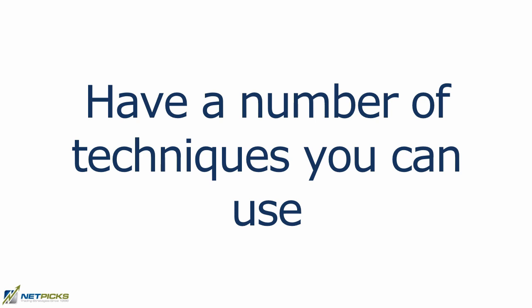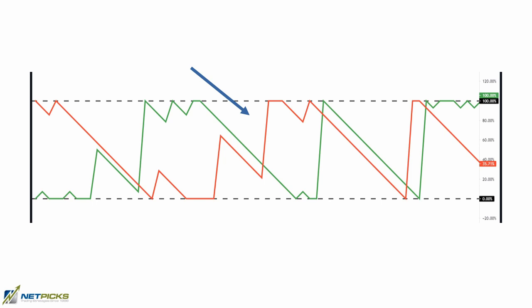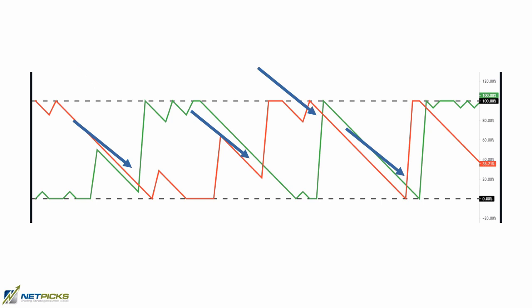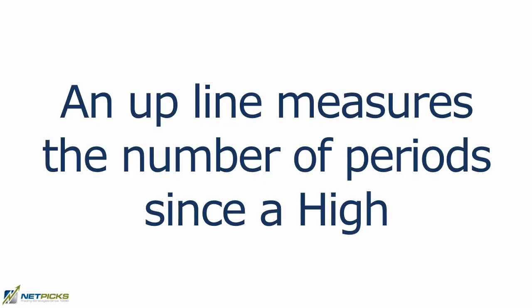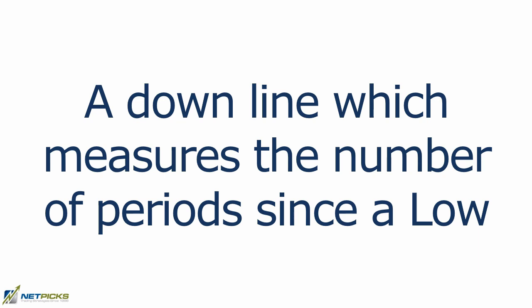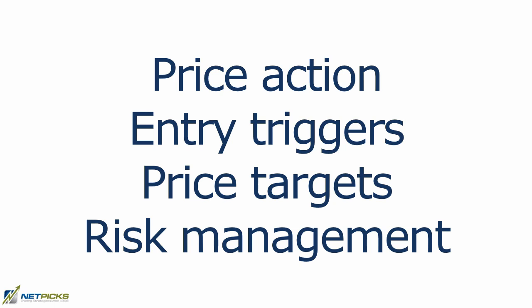Key takeaways: when the Aroon Down is above Aroon Up it shows bearish price action; Aroon Up above Aroon Down shows bullish price action. The crossing of the up and down lines can show a change in trend, especially on higher timeframes. The up line measures the number of periods since we saw a high; the down line measures the number of periods since a low. Bottom line — it's a tool. By itself it's not a trading strategy. You need to implement price action, have a trade trigger, know when to get out, and have risk protocols. Putting that together, then you could have a viable trading strategy.